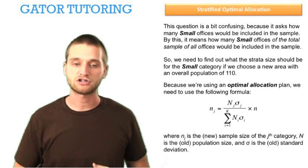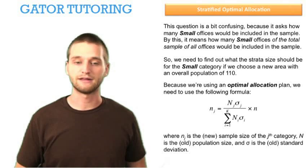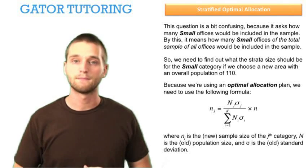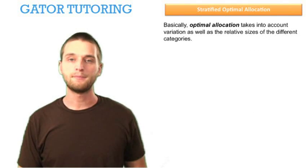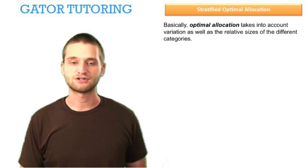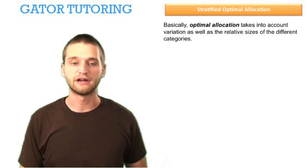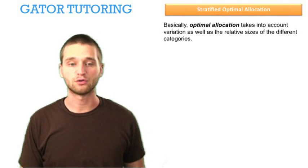And that whole fraction needs to be multiplied by little n, which is the new size of your overall population, the size of all the categories. Basically, optimal allocation takes into account variation as well as the relative sizes of the different categories.